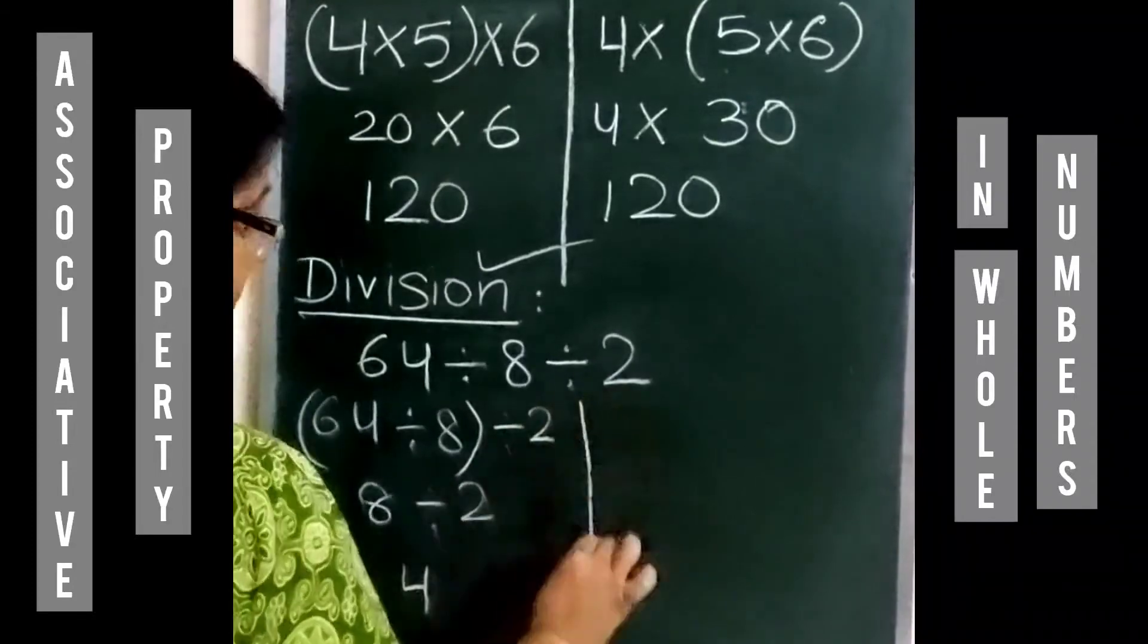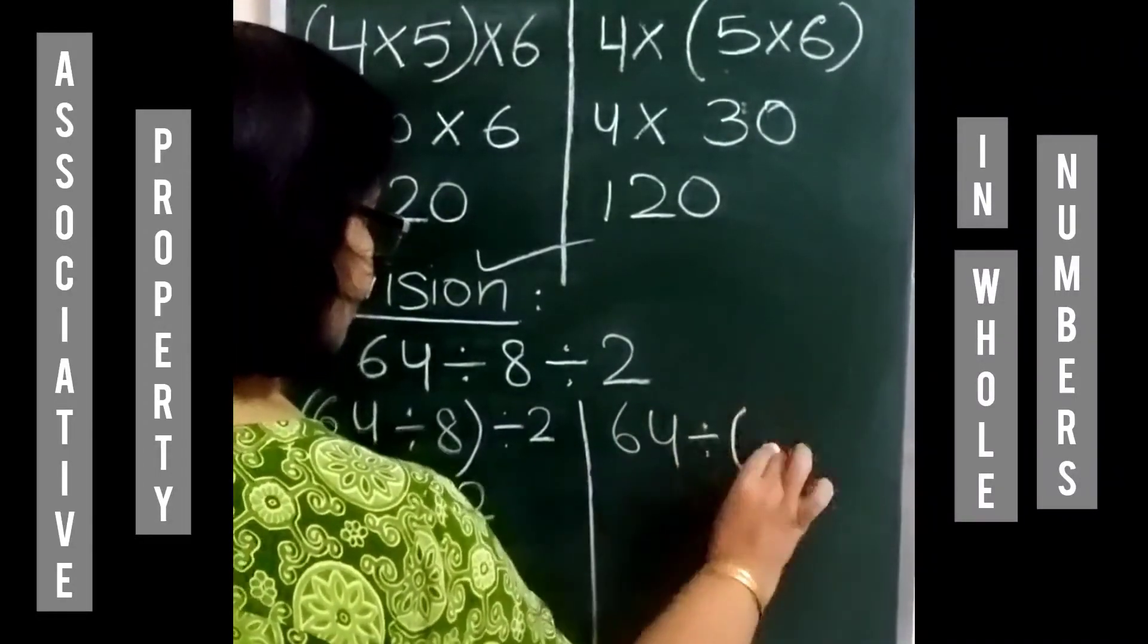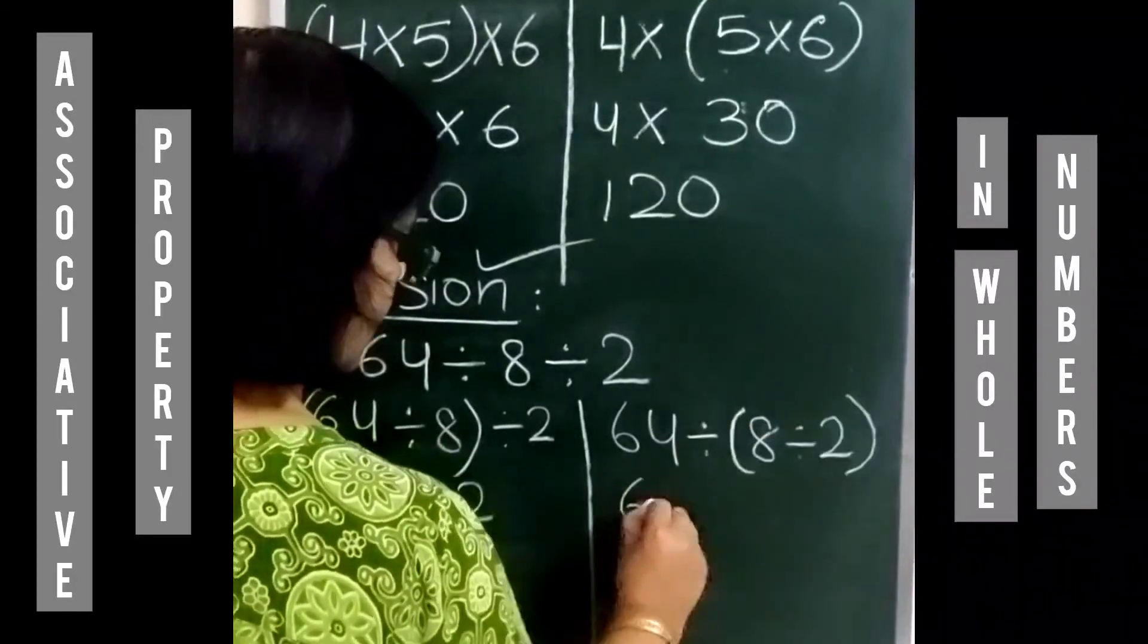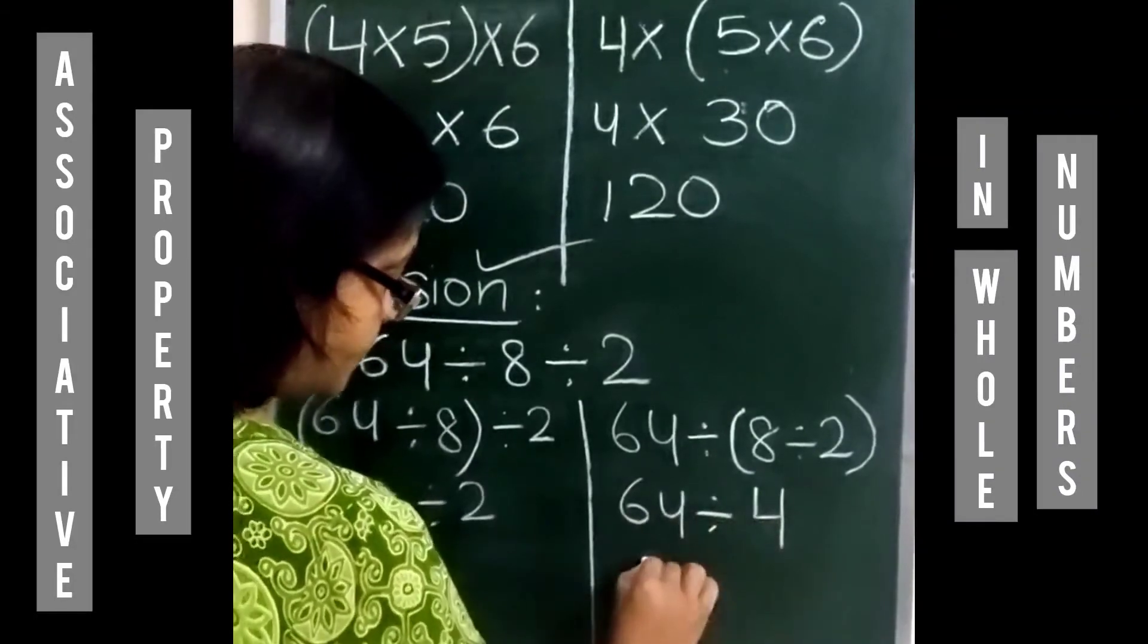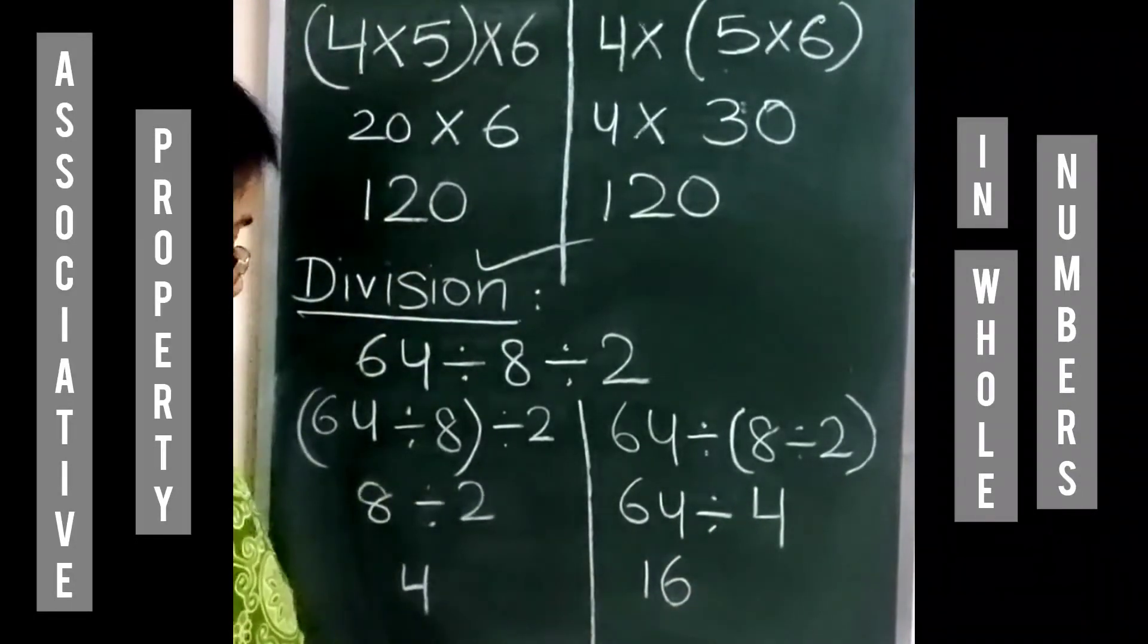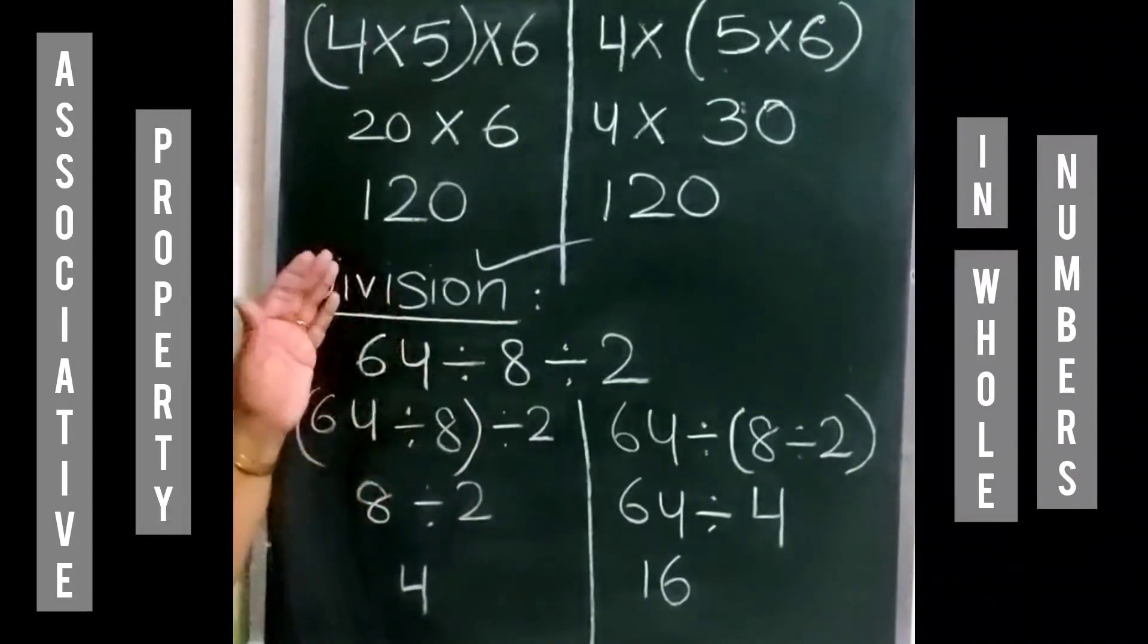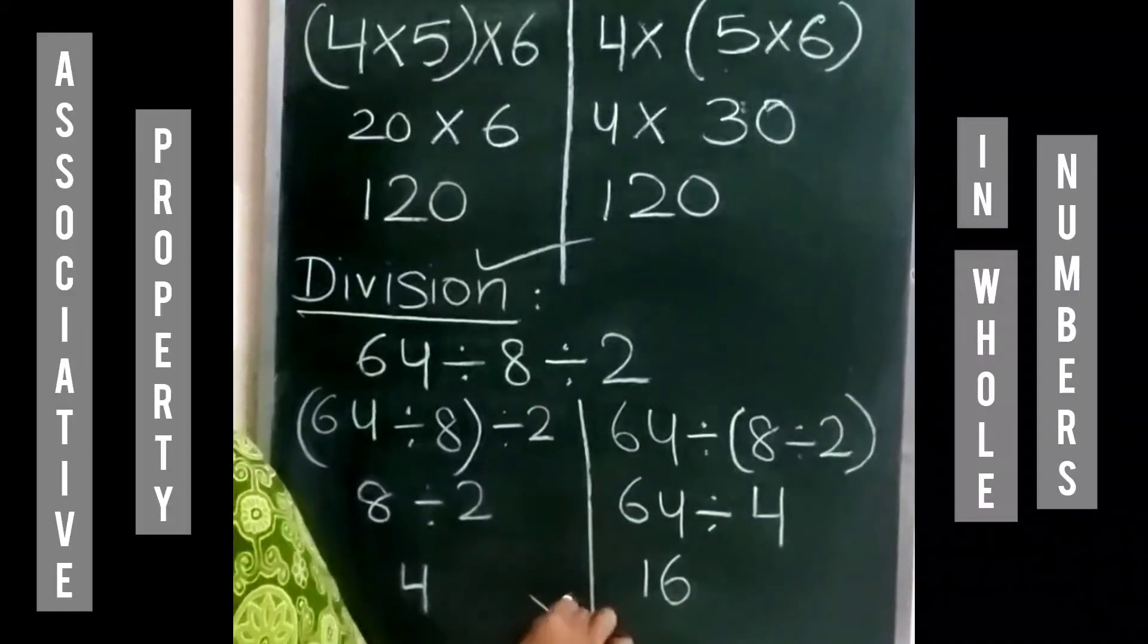Now let's change the groups. First of all, we will divide 8 by 2. 8 divided by 2 is equal to 4, and 64 divided by 4 is equal to 16, which is not equal. That means the associative property is not true for division.